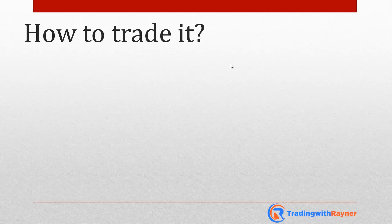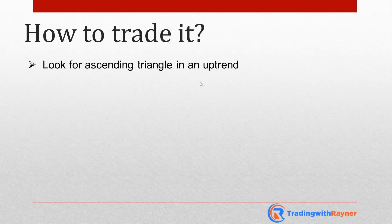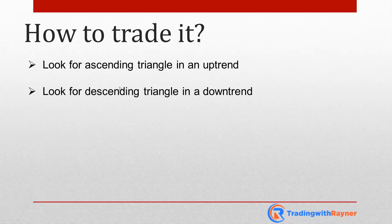So that's why these patterns work. Now, how do you trade ascending and descending triangles? For me, a very simple general rule is this: you look for an ascending triangle in an uptrend, and you look for a descending triangle in a downtrend. Basically, you go long on an ascending triangle in an uptrend, and you go short on a descending triangle in a downtrend. Let me share a few examples.